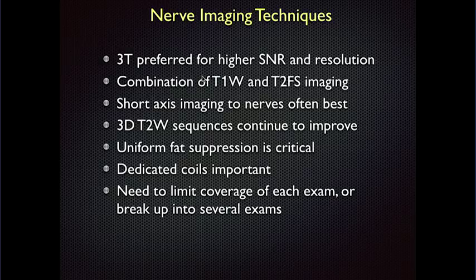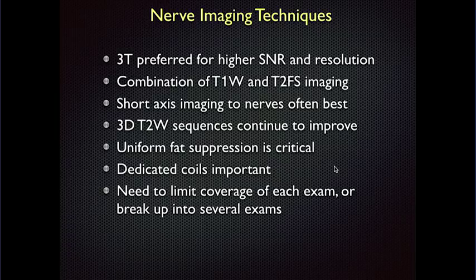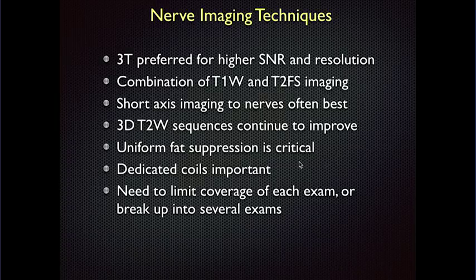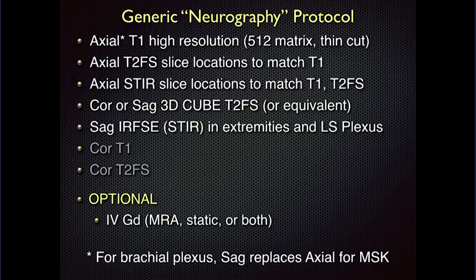We don't necessarily create MIP-type images in our practice — they're really not as useful diagnostically as they are for making a pretty picture. Other technique considerations: 3T is better because of higher signal-to-noise and resolution. T1 and T2 fat-sat imaging, short-axis orientation. There are a number of 3D sequences that can be used. It's important to get uniform fat suppression because if you're looking for a subtle abnormality, non-uniform fat suppression can artifactually make a nerve look hyper- or hypo-intense. You have to use dedicated coils and limit the coverage of the exam.